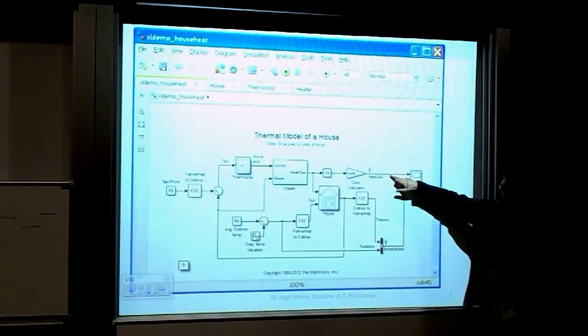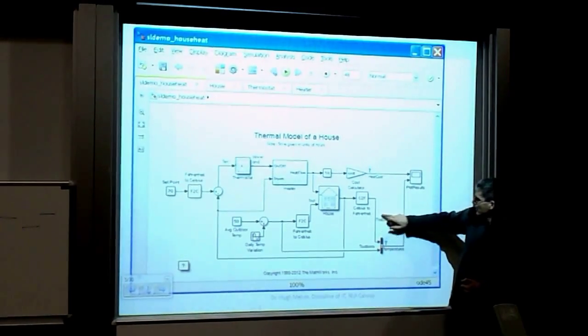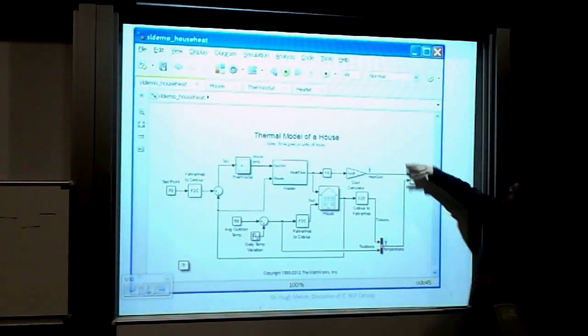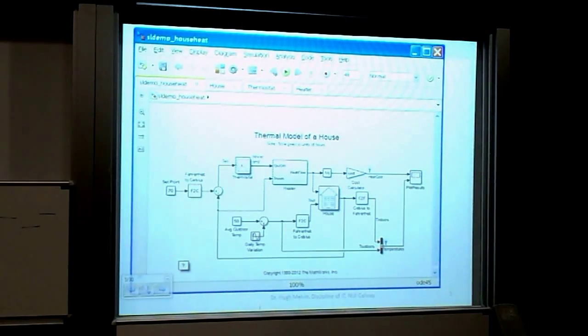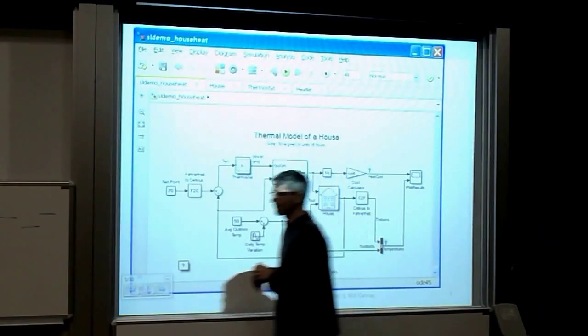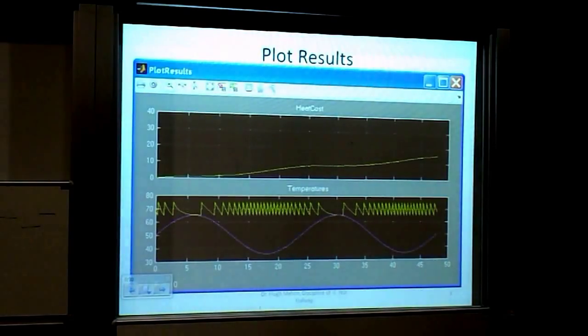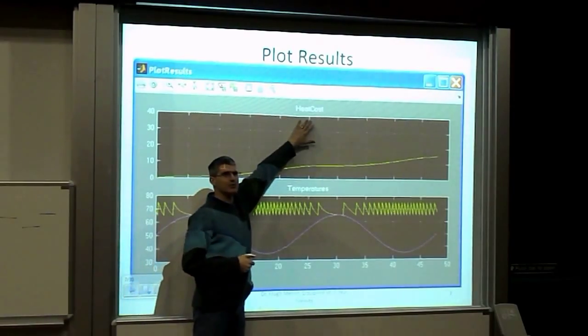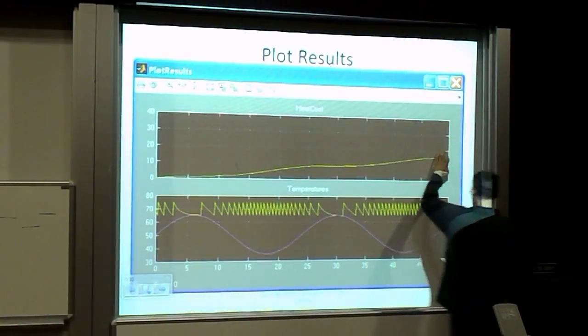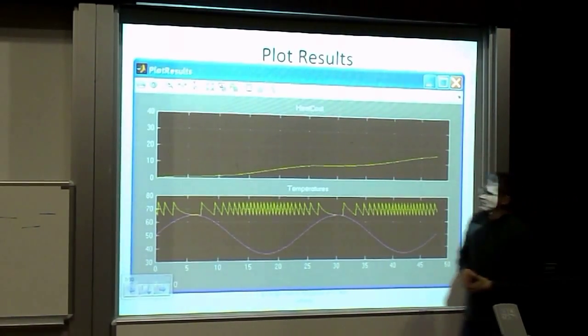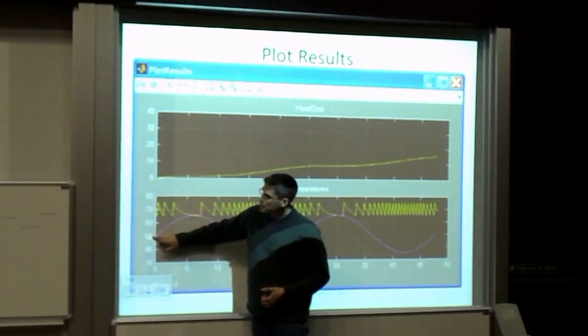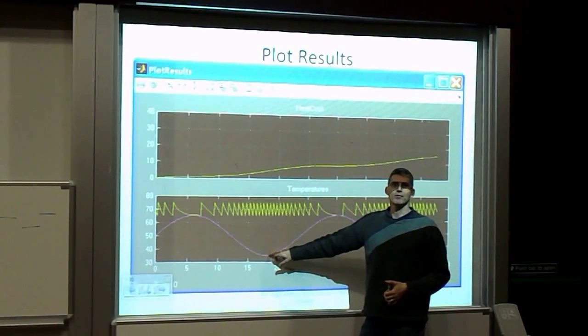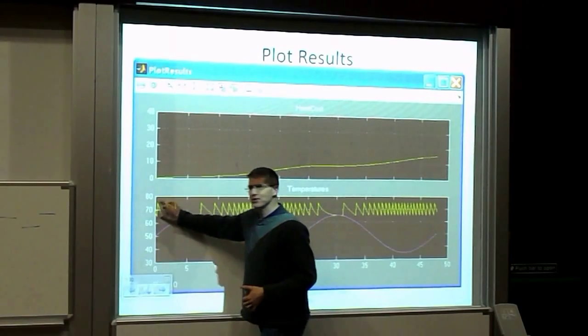For every joule of energy that the heater produces, we want to see how much that costs. We integrate it over time and multiply it by the cost of a joule of energy. This is our oscilloscope which gives us the results. We're showing how much it's costing and the indoor temperature and outdoor temperature. Over the course of the run time, which is 48 hours, we're going to see what happens. This is what happens.